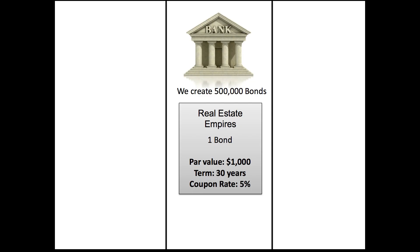Let's say that after Jack sat down with representatives of the bank and they determined that his company was healthy enough to take on a loan of $500 million, the bank decides to facilitate that loan through bonds. The bank is going to make 500,000 bonds, each with a par value of $1,000. When you multiply those numbers together, you get the $500 million Jack needs. The bank comes up with a coupon rate — let's say 5% — based on the risk and interest rates at the time.